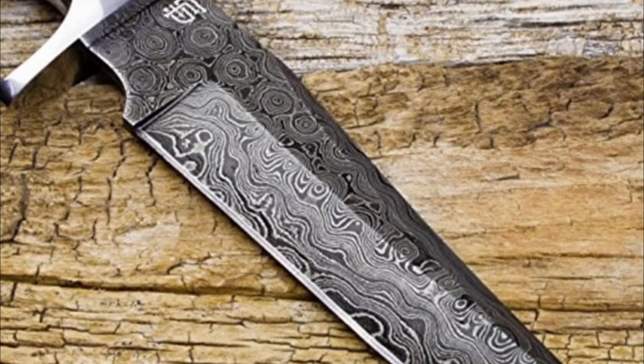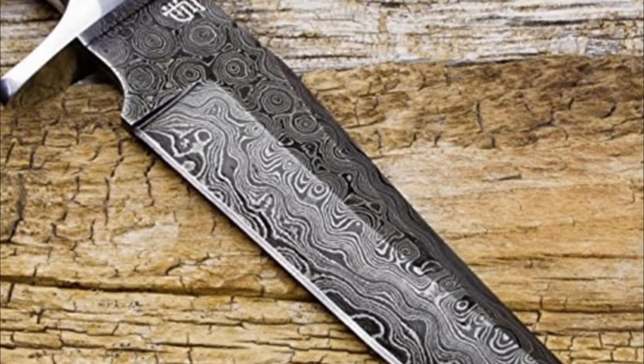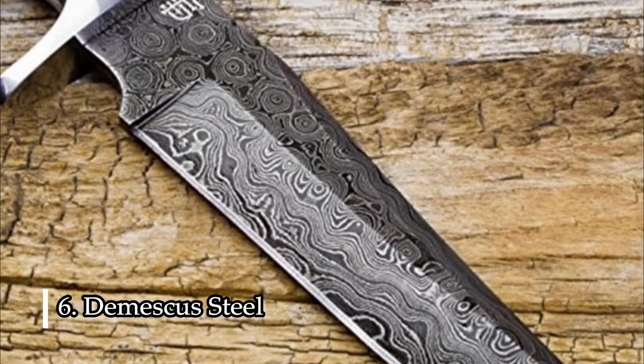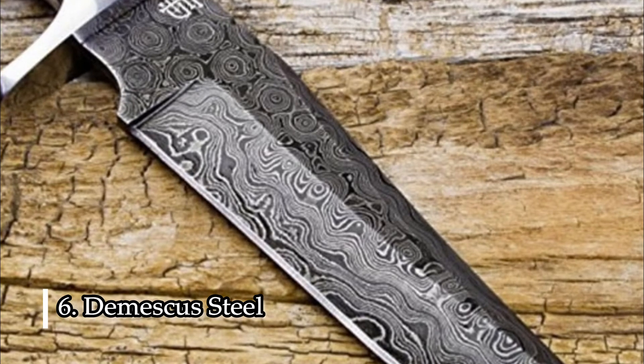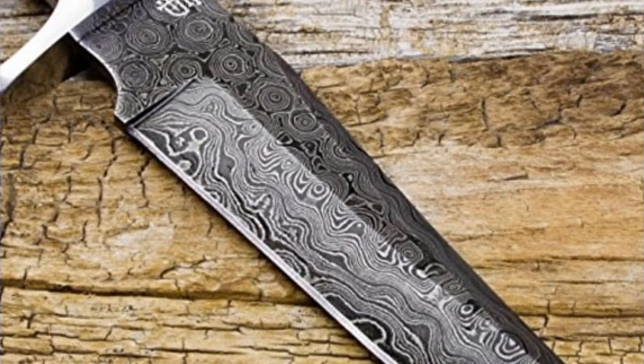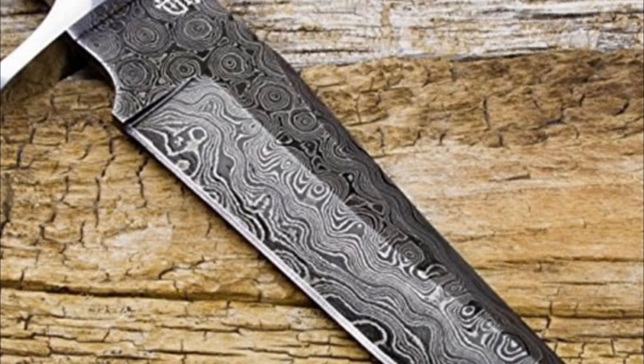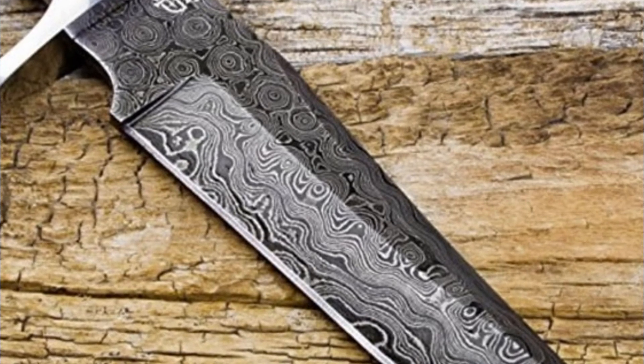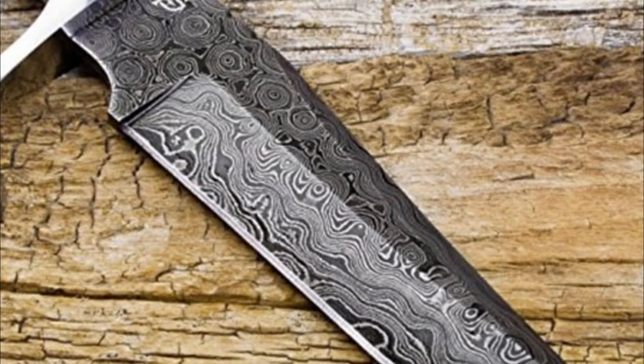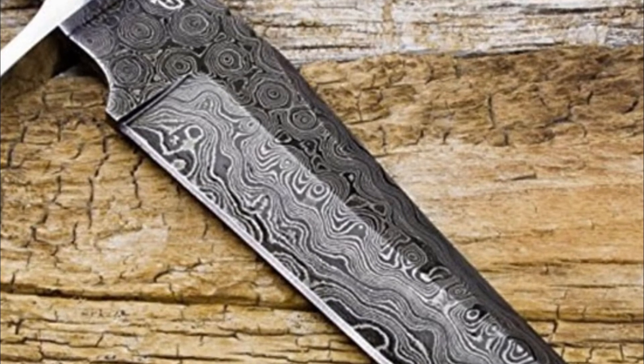A very good example is Damascus steel, which is over 1000 years old and contains carbon nanotubes, which is merely very strong. The blades made from that steel could supposedly cut through stone or metal.